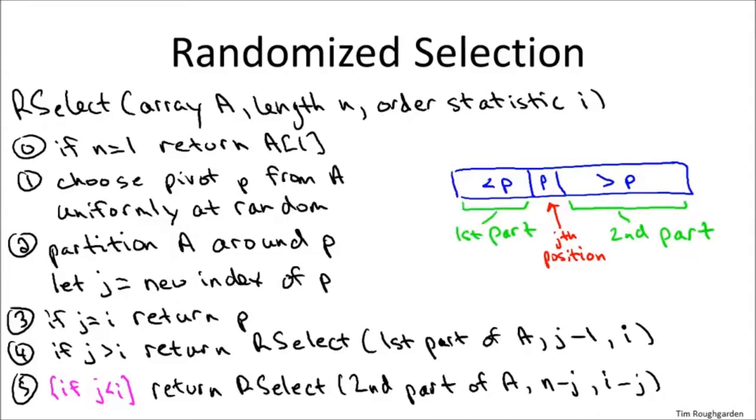So there's always the lucky case, chance one in n, that we happen to choose the ith order statistic as our pivot. So we're gonna find that out when we just notice that j equals i. In that super lucky case, we just return the pivot and we're done. Of course, that's so rare, it's not worth worrying about. So really, the two main cases depend on whether the pivot that we randomly choose is bigger than what we're looking for or if it's less than what we're looking for.